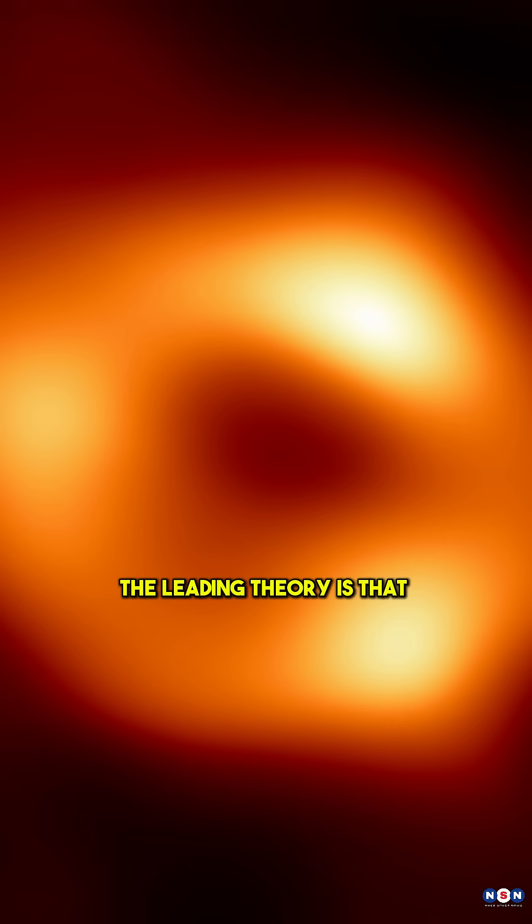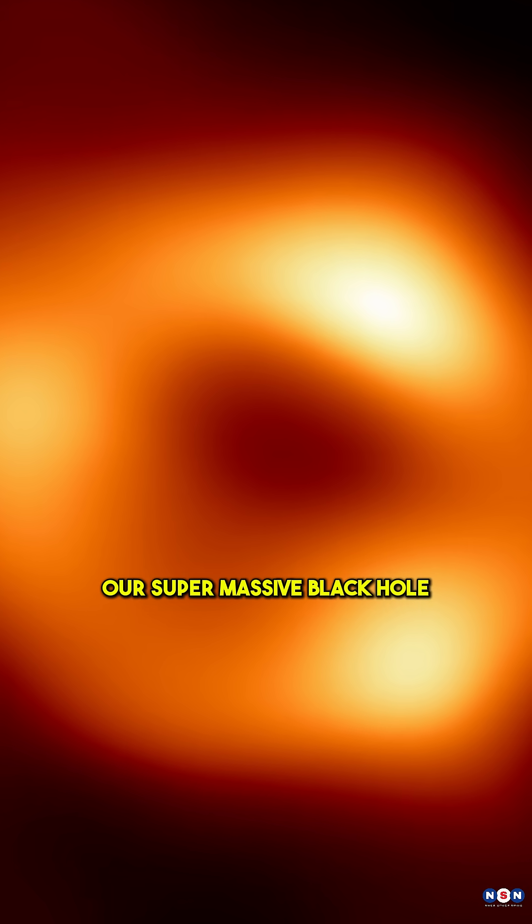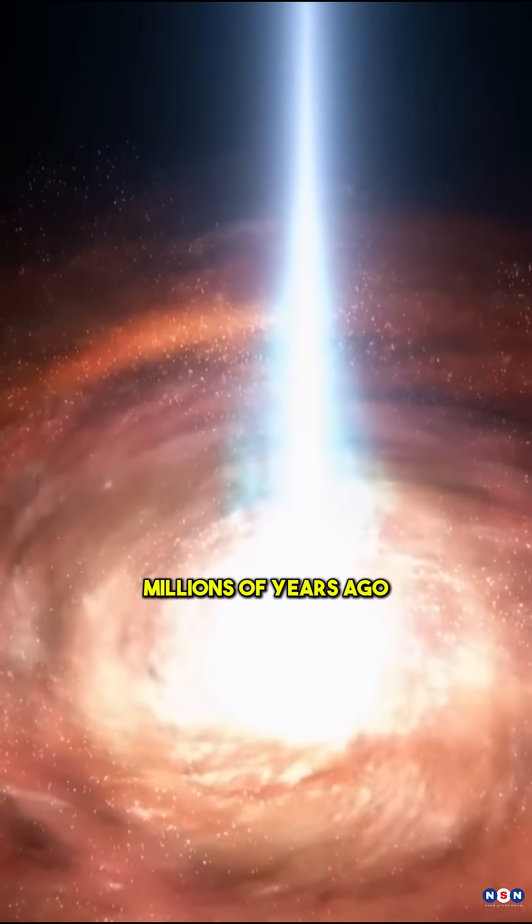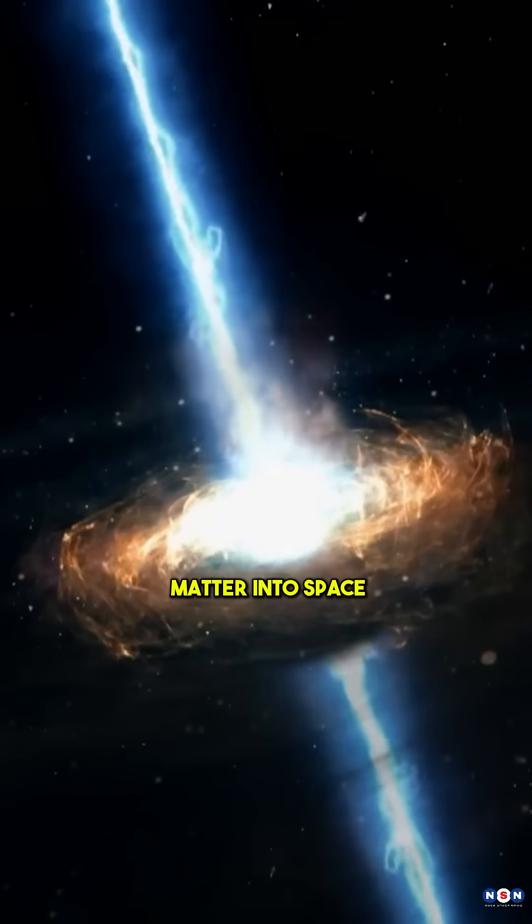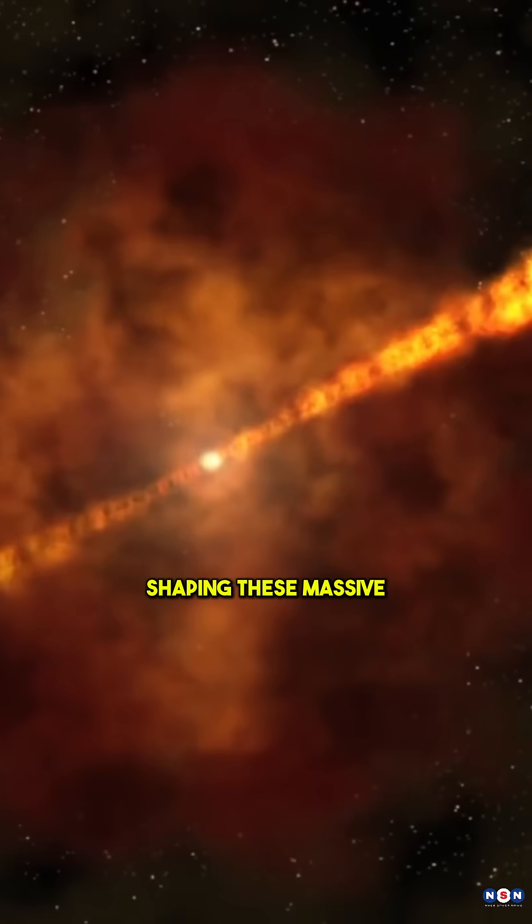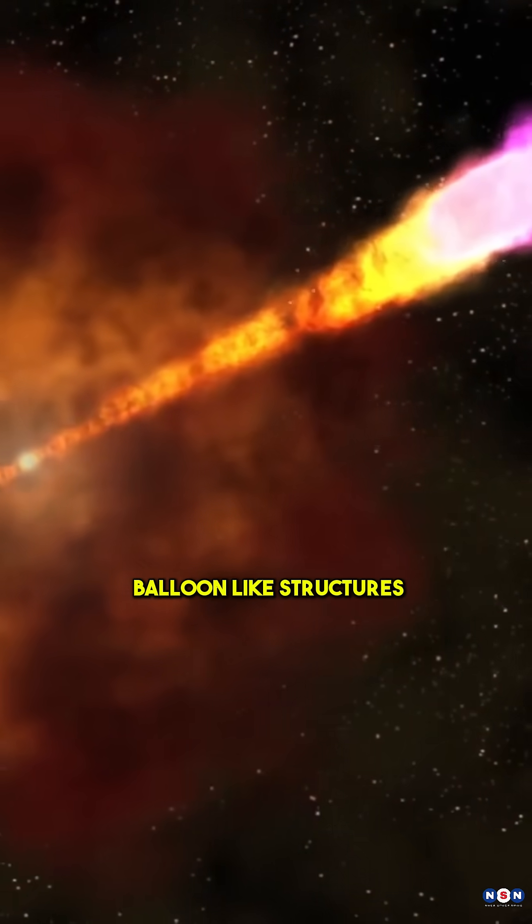So what caused them? The leading theory is that our supermassive black hole, Sagittarius A-star, had a violent outburst millions of years ago, blasting energy and matter into space, shaping these massive balloon-like structures.